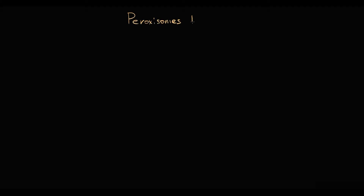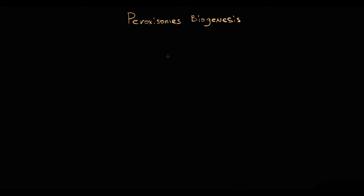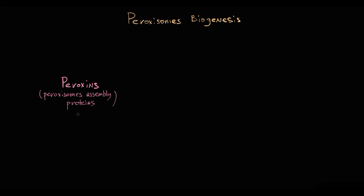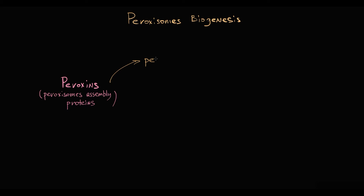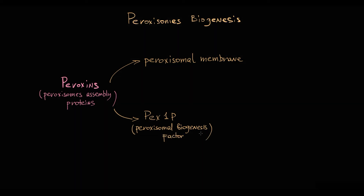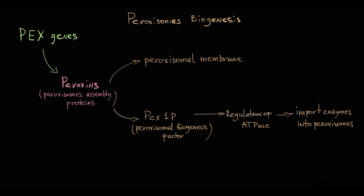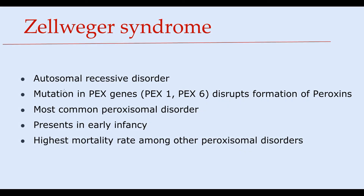To understand the pathology, we need to know how peroxisomes are formed. For proper biogenesis, peroxisomes require peroxins — peroxisome assembly proteins. These proteins provide proper assembly of peroxisomes, produce the peroxisomal membrane separating it from the cytoplasm, and provide instructions for making PEX1P (peroxisomal biogenesis factor), which regulates ATPases that import enzymes into the peroxisome. Production of peroxins is encoded by PEX genes.